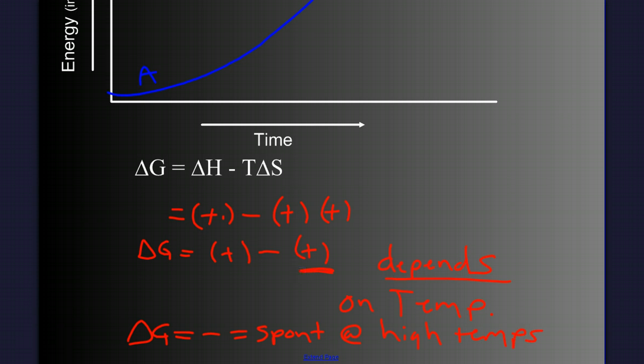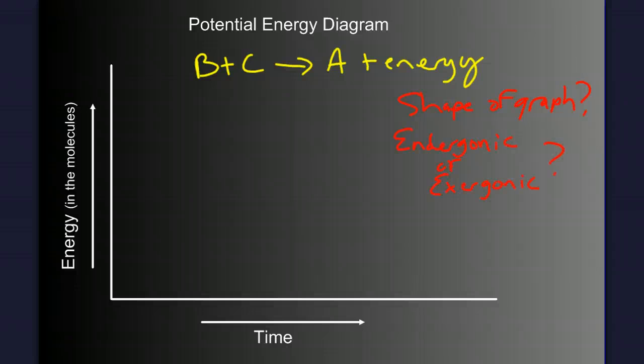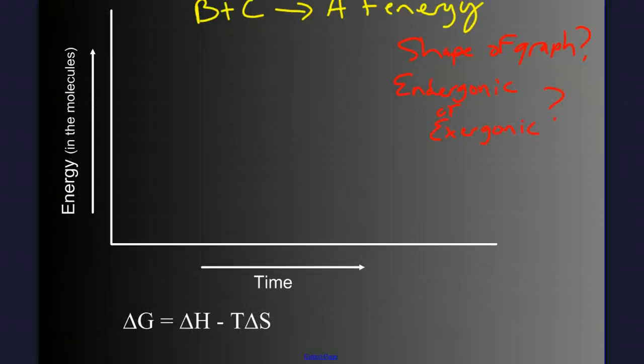I'm going to leave you with the last one to work out on your own. B plus C yields A plus energy. I want you to tell me or draw for me the shape of the graph. Determine if it's endergonic or exergonic. And using Gibbs free energy equation, under what conditions could this reaction occur spontaneously?